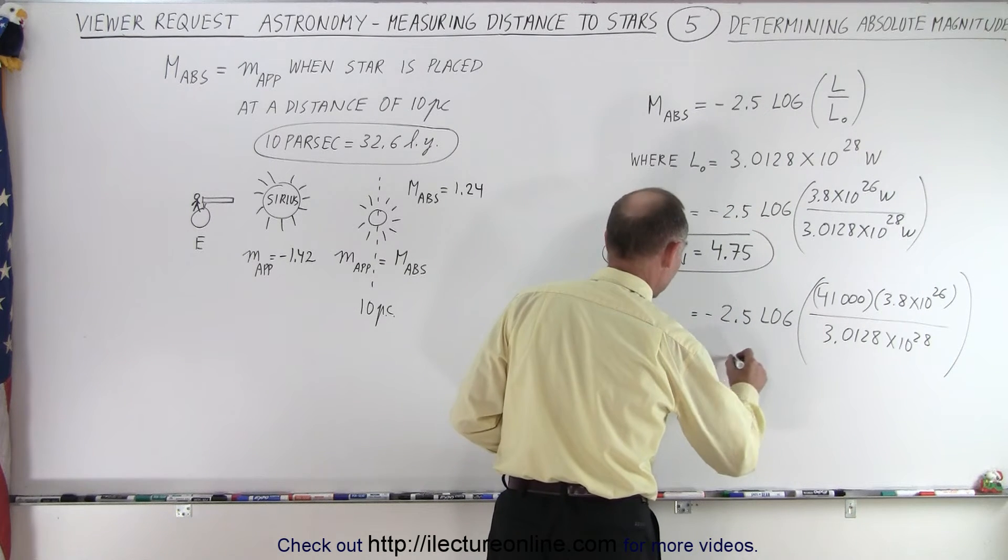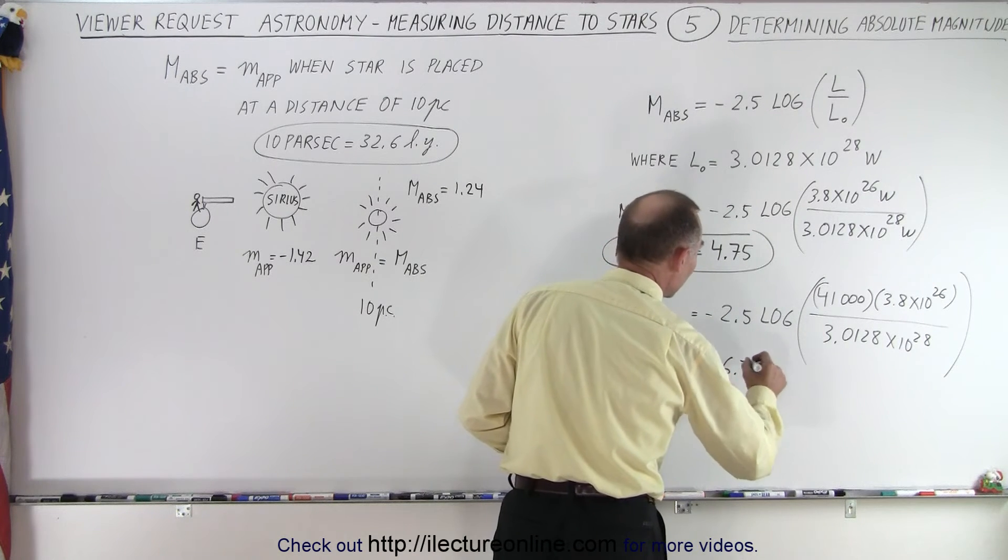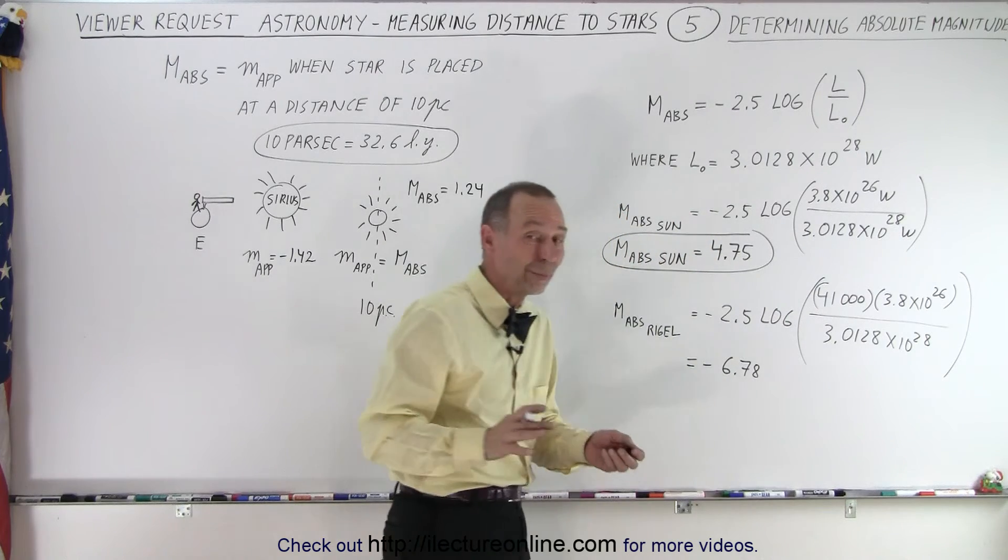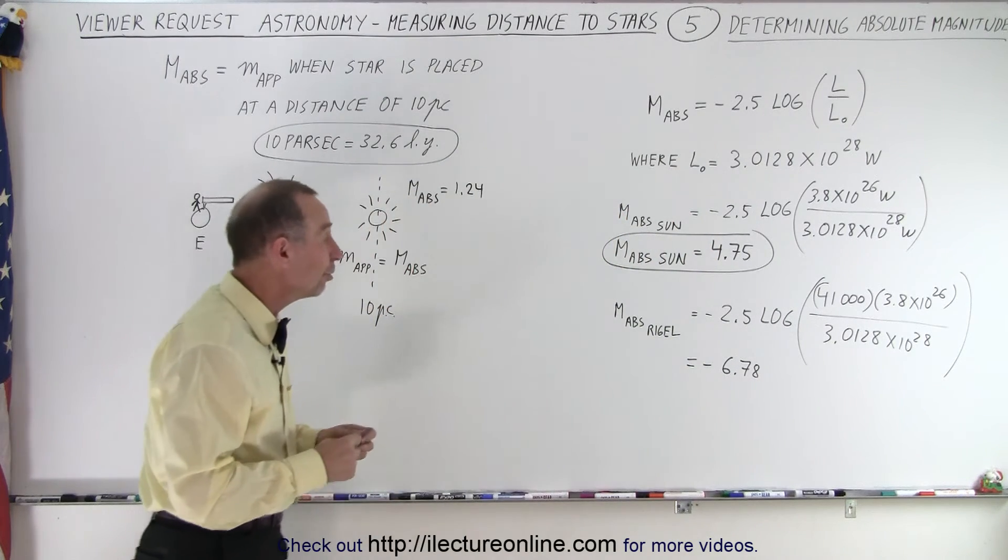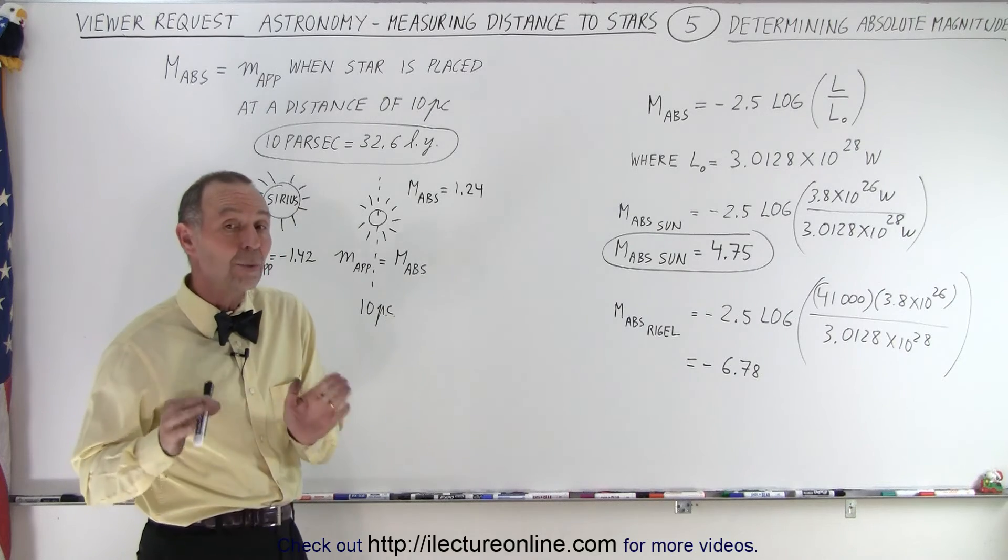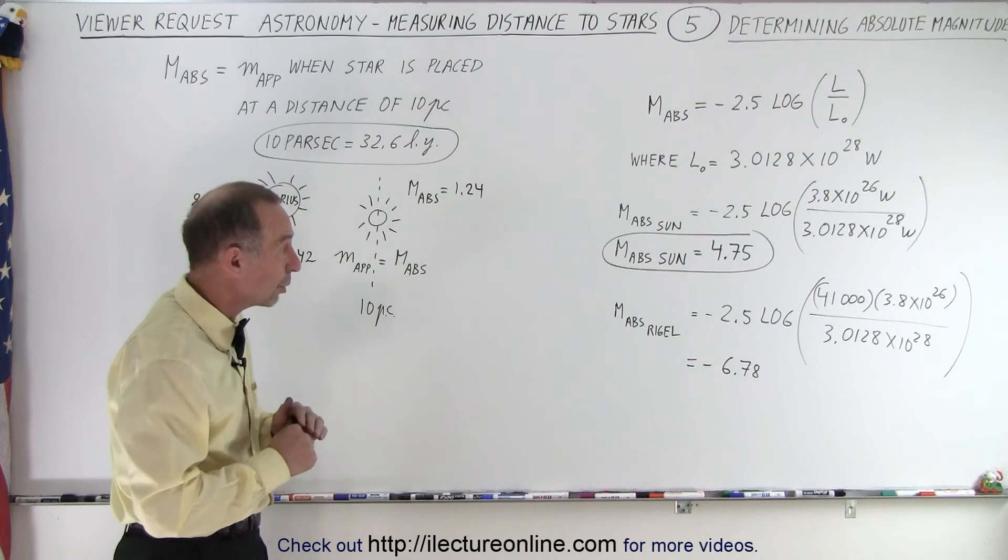So that would be equal to minus 6.78, which is indeed fairly close to what we believe to be the absolute luminosity of Rigel. So this is how we do that. This is the calculation that we use.